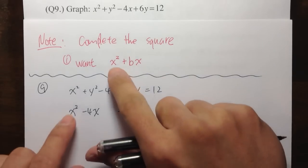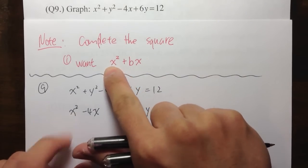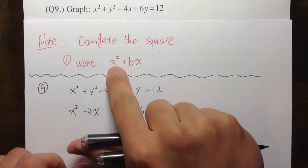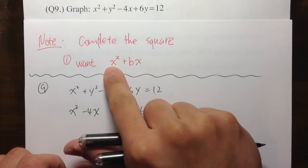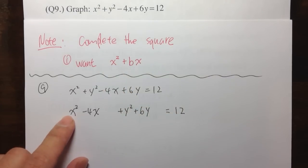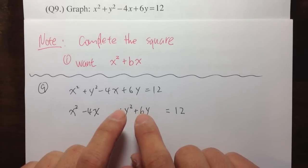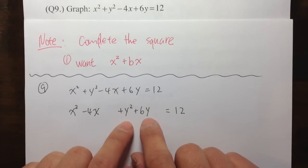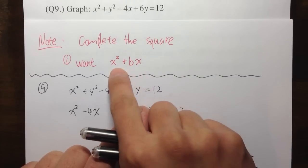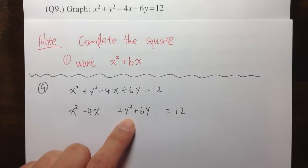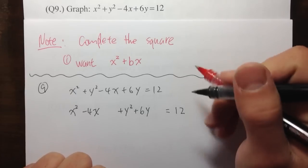We want to make sure the number in front of x squared is equal to 1 — and we have it here. Likewise, for the y, we are also going to complete the square for y, and we have it in the right form as well. So that's the first thing that you want.